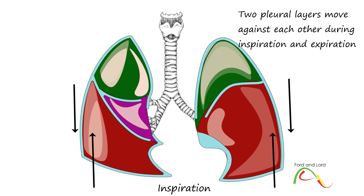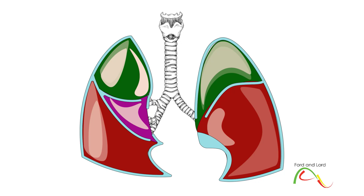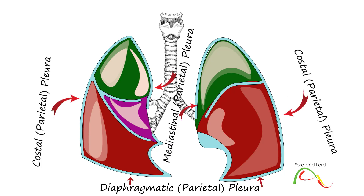The visceral pleura is attached to the lung parenchyma, and the parietal pleura is attached to various parts of the thoracic cavity. The parietal pleura has costal, mediastinal, and diaphragmatic parts. The superior part of the parietal pleura, which covers the apex, is known as the cupula.